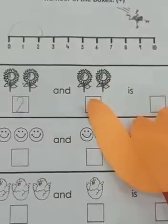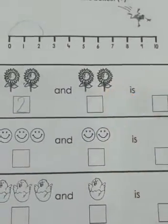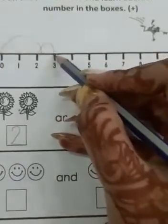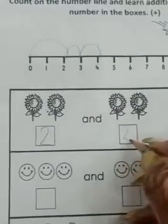And here you can see 2 more flowers, yes. So let's jump 2 more times. 1, 2. So let's write 2 over here.